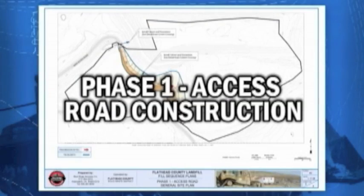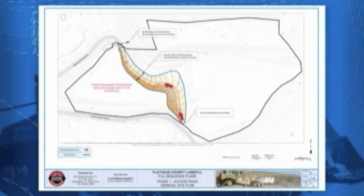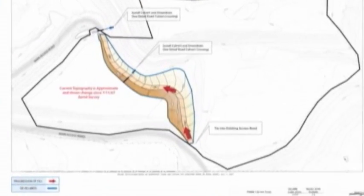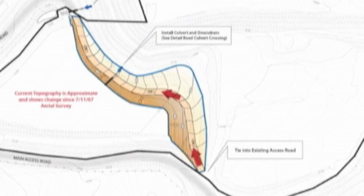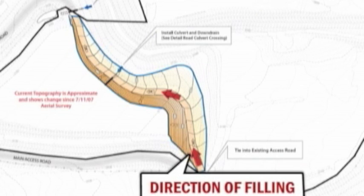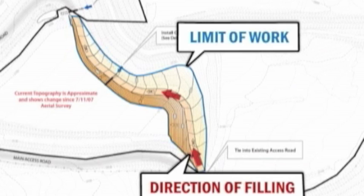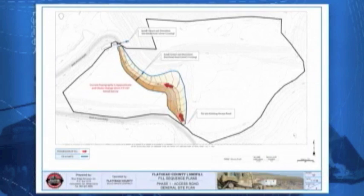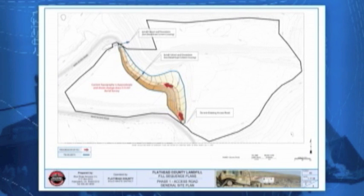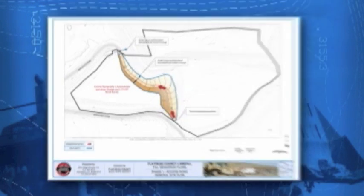This sheet shows where you'll start filling in accordance with this fill sequence plan. The large arrows show the direction of filling. The heavy line shows the limit of work and where the current filling will tie into existing grade. These are provided as reference points only, and in some cases you'll need to modify the tie-in point to fit actual field conditions.